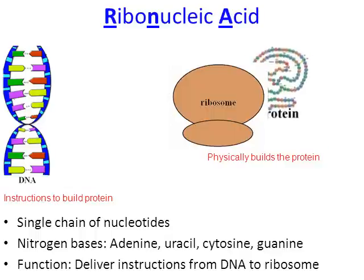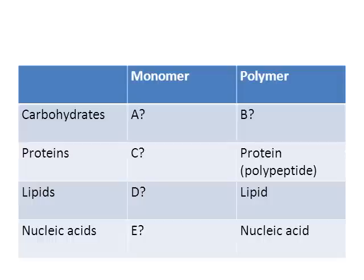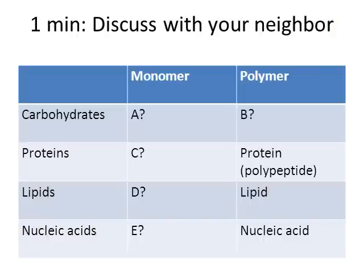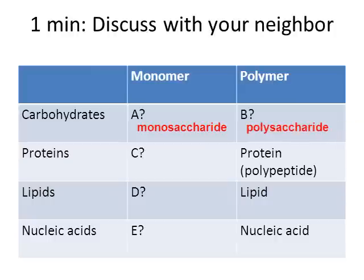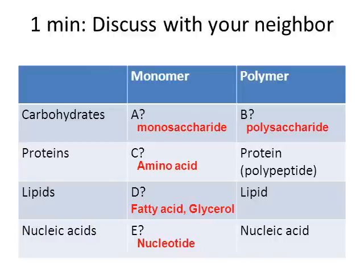Here is a summary table. The monomer of a carbohydrate is called a monosaccharide; the polymer of a carbohydrate is called a polysaccharide. The monomer of a protein is called an amino acid. The monomer of a lipid is actually two: fatty acids and glycerol — a fatty acid and a glycerol bond to make a lipid, which is the polymer. And the last one, which is what we discussed in this video: a nucleotide is the monomer, and a bunch of nucleotides bond to make a polymer called a nucleic acid.